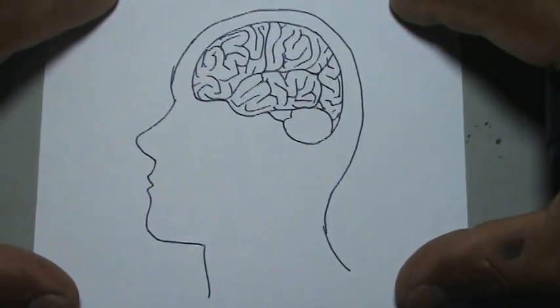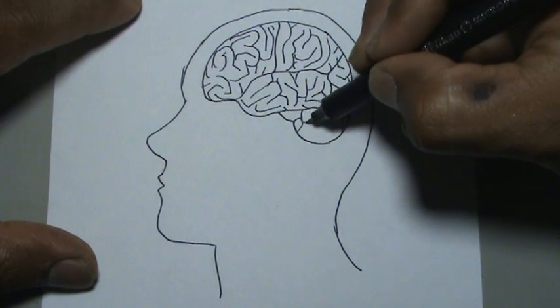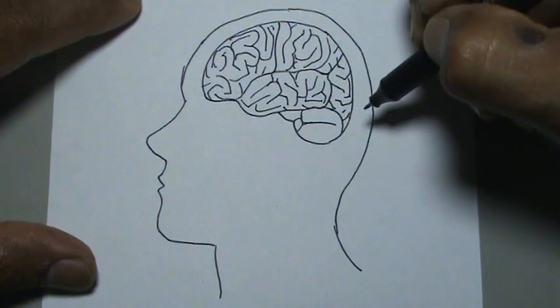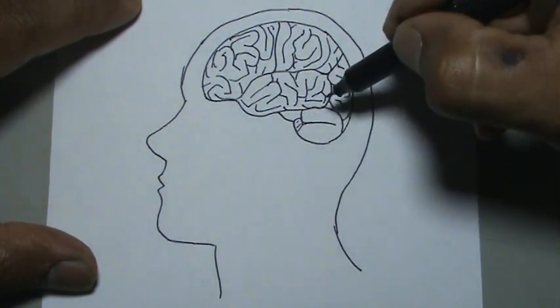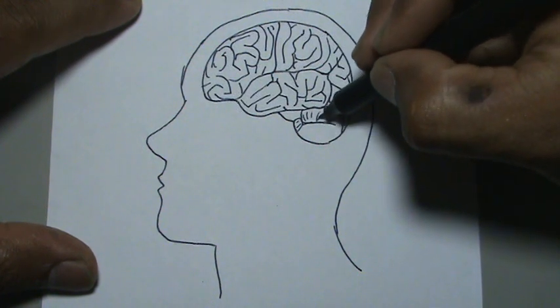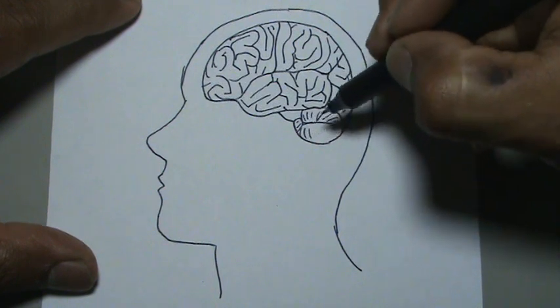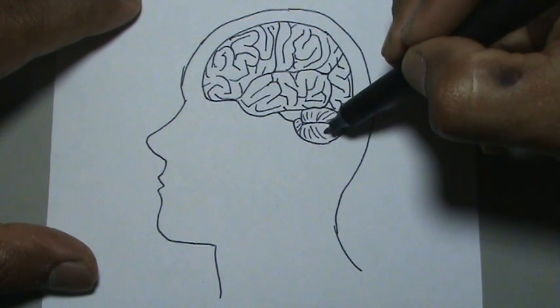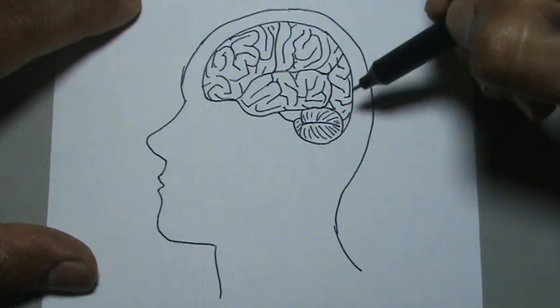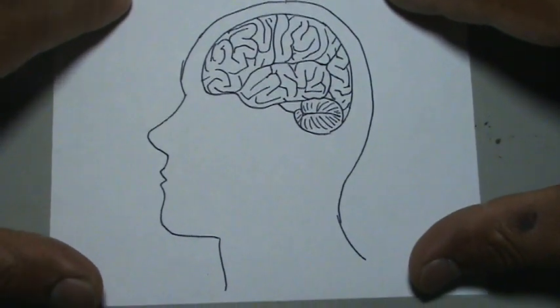Entonces ahí tenemos un cerebro con ese aspecto, y ahora vamos a llenar este órgano de acá abajo con unas rayitas, rayitas seguiditas hacia arriba. El aspecto de este es un poco diferente, hacemos rayitas hacia abajo también. Ahí tenemos nuestro cerebro.